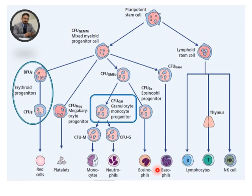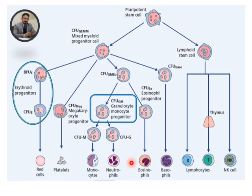Agranulocytes are those cells which lack granules in their cytoplasm. We have two types of agranulocytes: lymphocytes and monocytes. This is lymphocyte and monocyte here. So this is agranulopoiesis, while granulopoiesis covers neutrophils, eosinophils, and basophils.